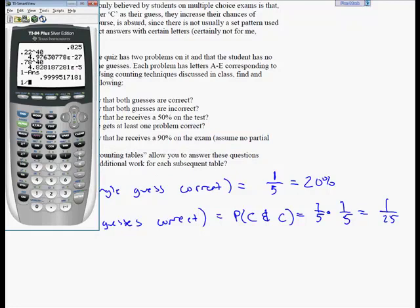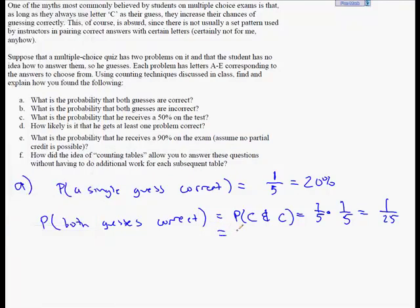And that comes out to one divided by 25, about 0.04 or 4%. So 4% chance that you guess on two problems with five possibilities each and that you guess both of them correctly. Not a very high likelihood.